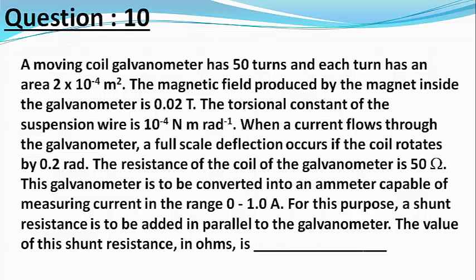This galvanometer is to be converted into an ammeter capable of measuring a current from 0 to 1 ampere. For this purpose, a shunt resistance is to be added in parallel to the galvanometer. The value of this shunt resistance, in ohms, is to be determined.